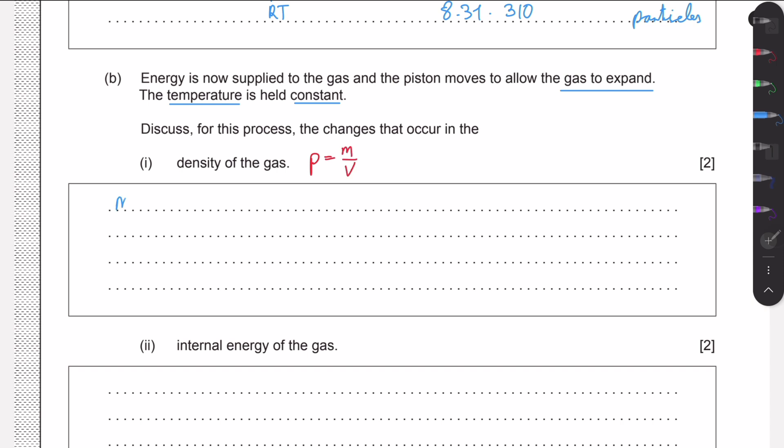Mass is constant, but the piston expands. If the piston expands, that means the volume increases. If we still have the same number of particles, or the same mass of particles, in a larger volume, the density will decrease. So density decreases as they will simply occupy a larger volume.